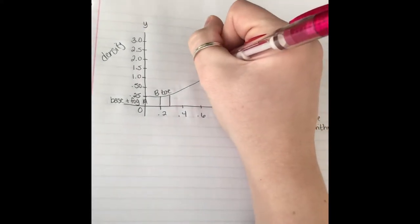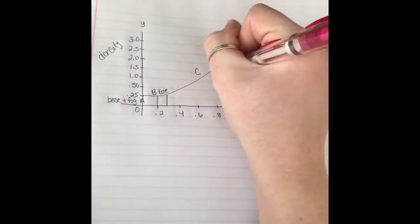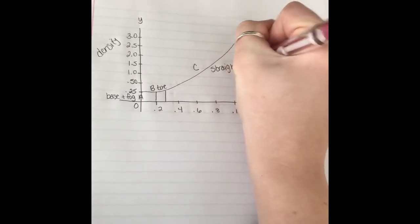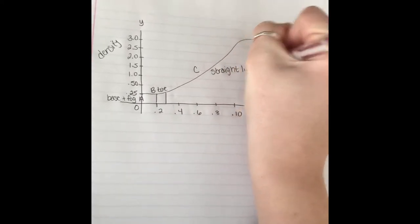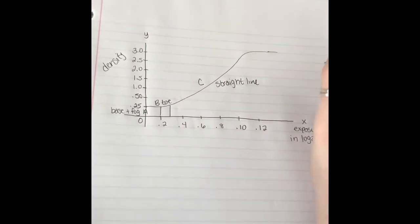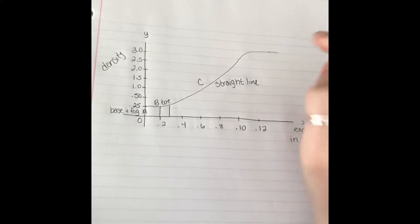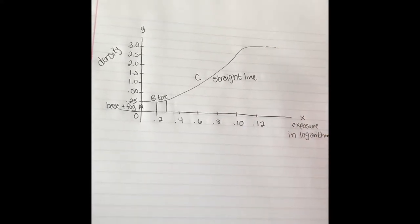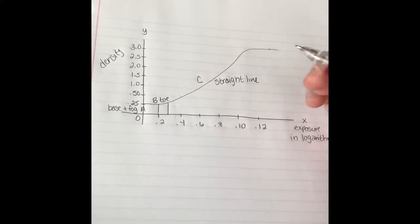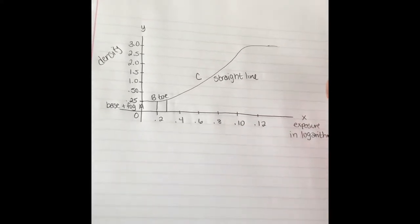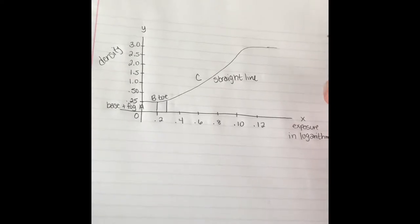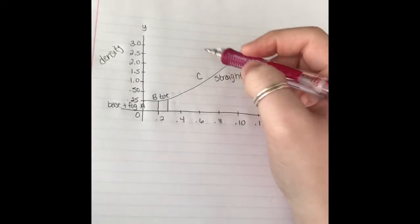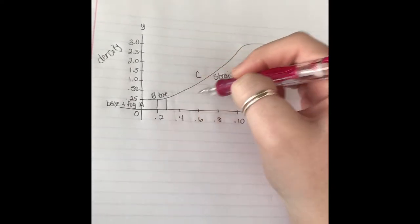Over here is the straight line or slope of the curve. This is the most important area on the curve because it is the point of latitude, meaning it is the range of exposures within diagnostic limits — this is the area of optimal density on the curve.